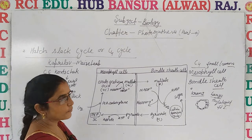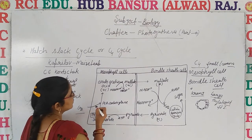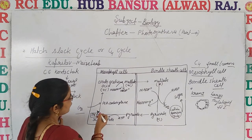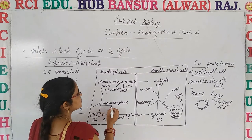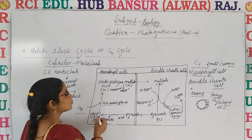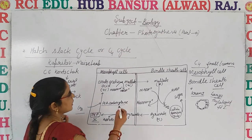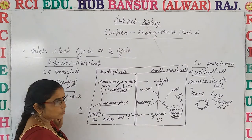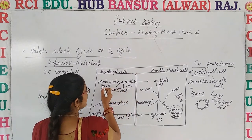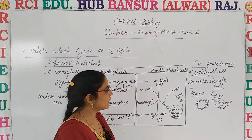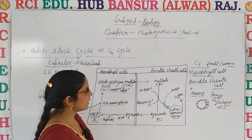Now let's discuss about the mechanism of the C4 cycle. During the C4 cycle, first carbon dioxide enters from the atmosphere into the mesophyll cell of the leaf, where it gets combined with phosphoenolpyruvic acid, which is a three-carbon compound, in the presence of carboxylase enzyme. This phosphoenolpyruvic acid is converted into oxaloacetic acid or malic acid. Oxidation of NADPH takes place, resulting in the formation of NADP. Oxaloacetic acid is later converted into malic acid or malate, which then enters into the bundle sheath cell.